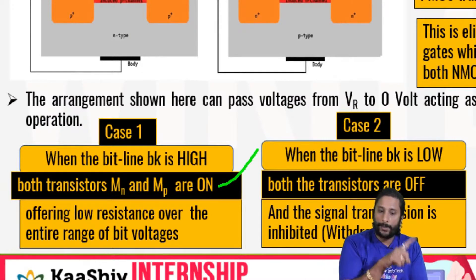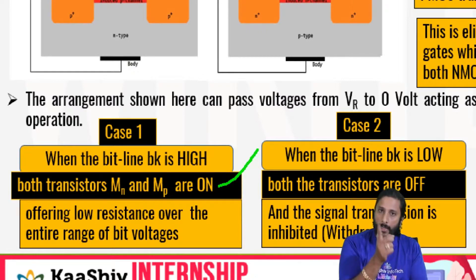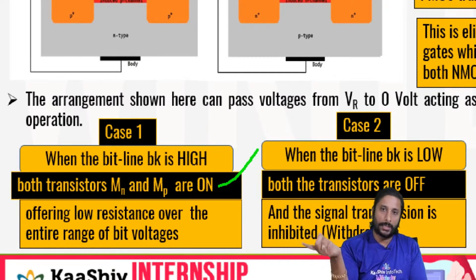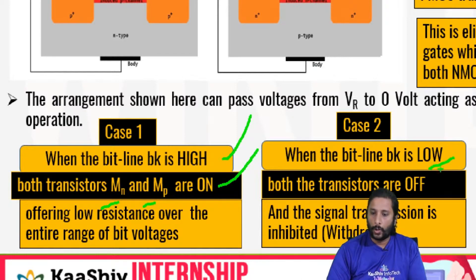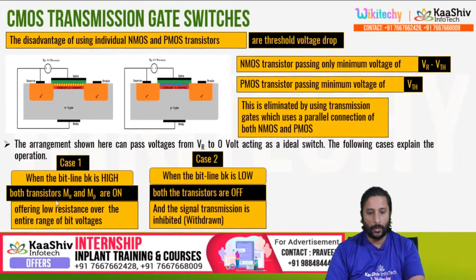The NMOS and PMOS parallel connection reduces overhead, and the frequency input is set up through the line configuration.